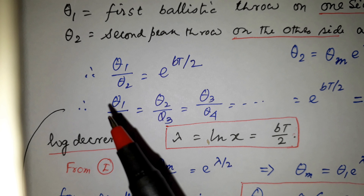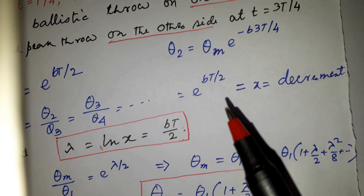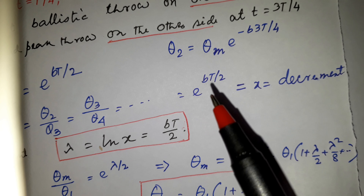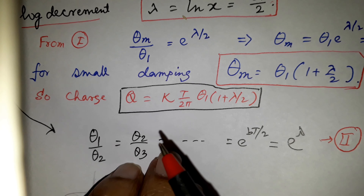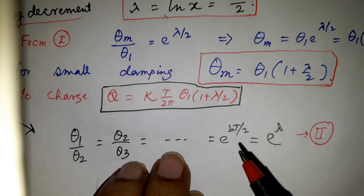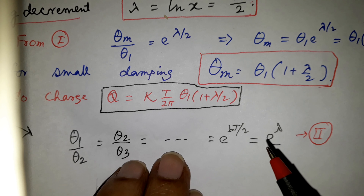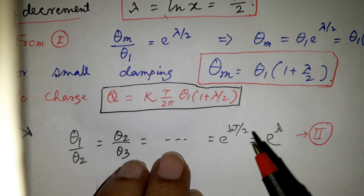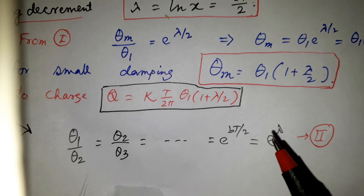Again, theta_1/theta_2 equals theta_2/theta_3 equals e to the power bT/2 equals e to the power lambda, since bT/2 is lambda.